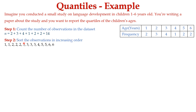In step 2, we need to sort the observations in increasing order. The frequency value for age 1 is 2, so we write the value 1 two times: 1, 1. The frequency value of age 2 is 3, so we write 2 three times: 2, 2, 2. The frequency value of age 3 is 4, so we write 3 four times: 3, 3, 3, 3. The frequency of age 4 is 1, so we write 4 once. The frequency of age 5 is 2, so we write 5 two times. The frequency of age 6 is 2, so we write 6 two times: 6, 6. Now we have sorted the observations in increasing order.